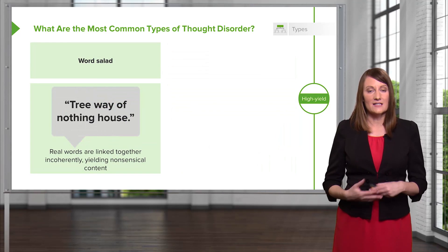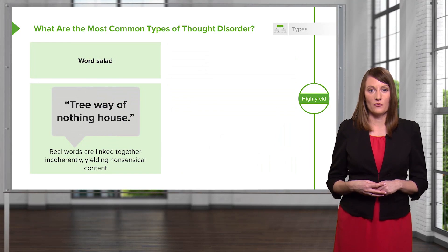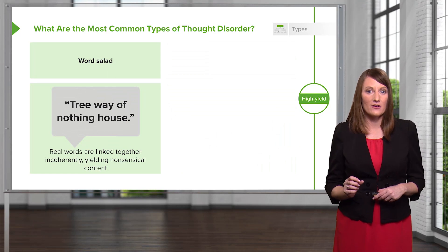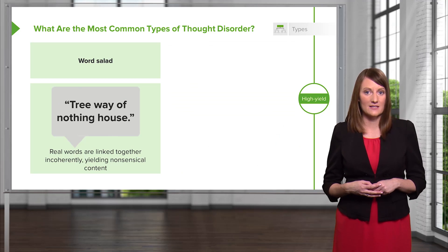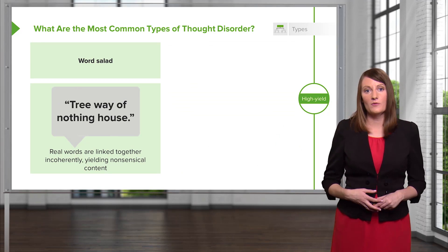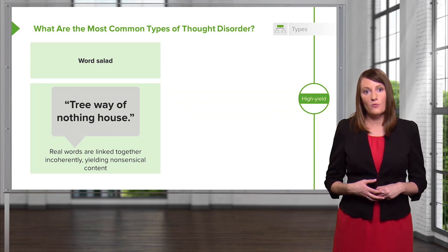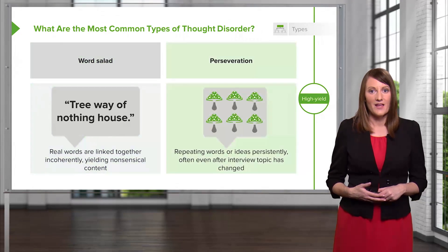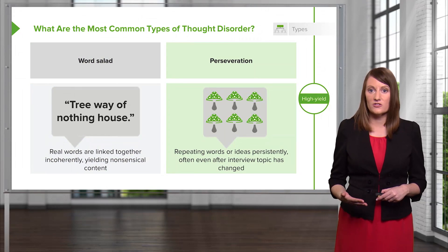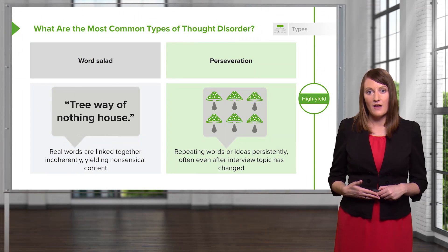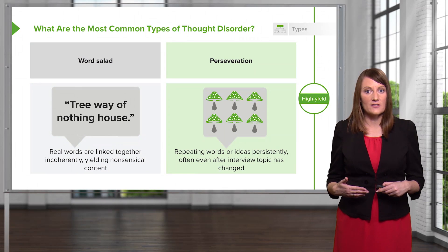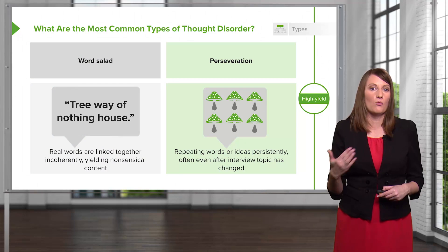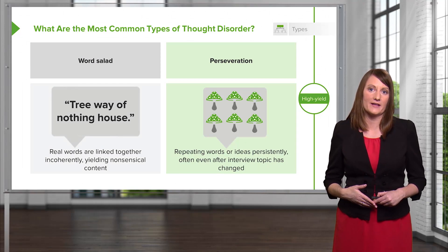A word salad is another important type of thought disorder where real words are linked together incoherently — it's nonsensical. An example would be a patient saying, "tree way of nothing house" — it makes no sense. A perseveration is repeating words or ideas persistently, often even after the interview topic has changed, where somebody can't let go of a point and just keeps bringing it up over and over again.